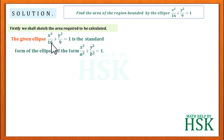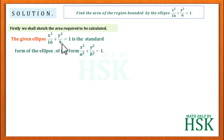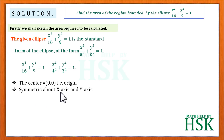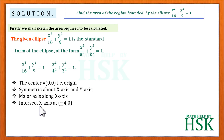The given ellipse x²/16 + y²/9 = 1 is in the standard form x²/a² + y²/b² = 1. So I can write the equation of the ellipse as x²/4² + y²/3² = 1. From this equation, I can easily identify that the center is at the origin, it is symmetric about both the x-axis and y-axis, and the major axis is along the x-axis.